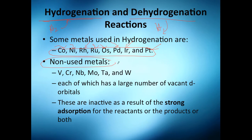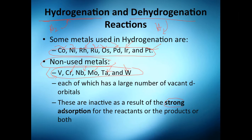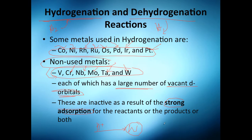You might think you can use any transition metal, but that's not the case. Vanadium, chromium, niobium, molybdenum, tantalum, and tungsten are not recommended at all because they have a very strong absorption rate due to the number of vacant d-orbitals. They have a lot of them, so hydrogen that comes in — for example, onto tungsten — will stay there and never leave. That's not what you want; you want the metal to absorb hydrogen but also be able to release it.